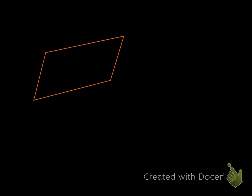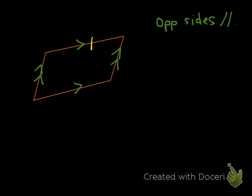Parallelogram — this one might not look perfect, but if it's a parallelogram, a couple things have to be true. The first and most important is that opposite sides have to be parallel. So this side is parallel to that side, and the opposite sides are parallel to each other. The second thing is that opposite sides have to be congruent — this side is congruent to that side, and this side is congruent to that side. So opposite sides are congruent.